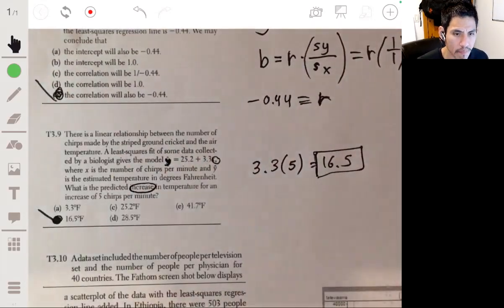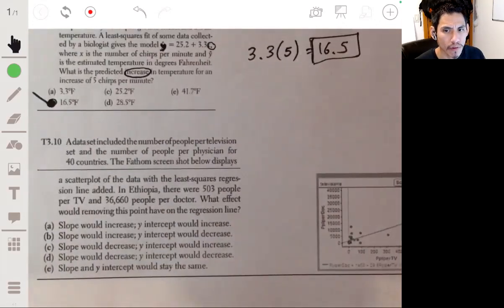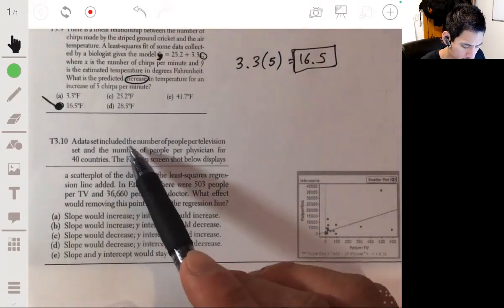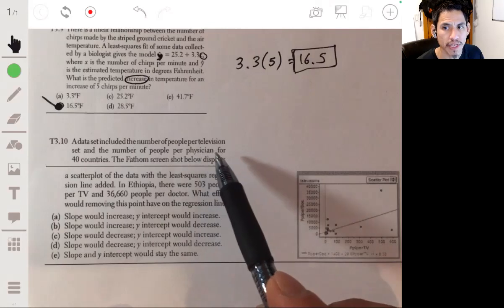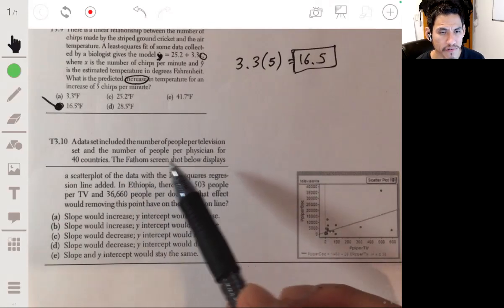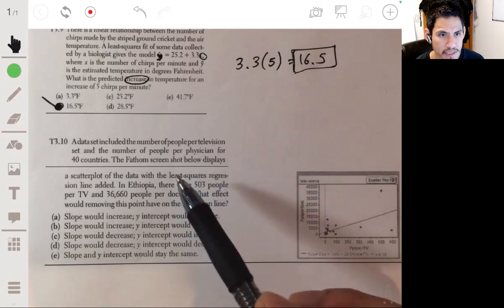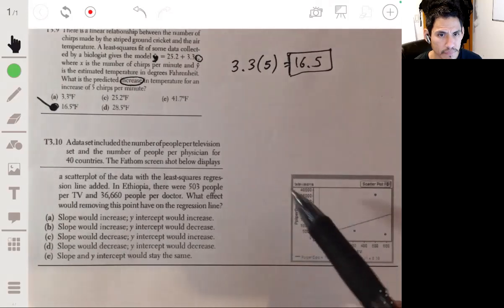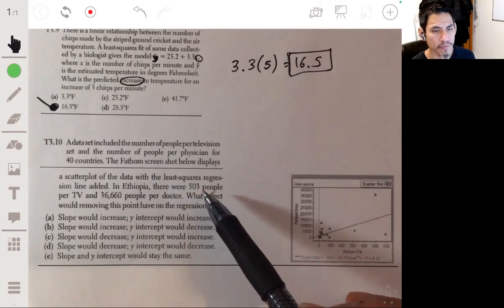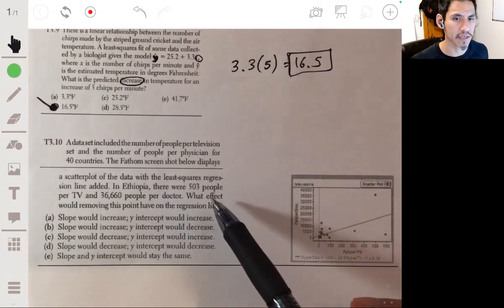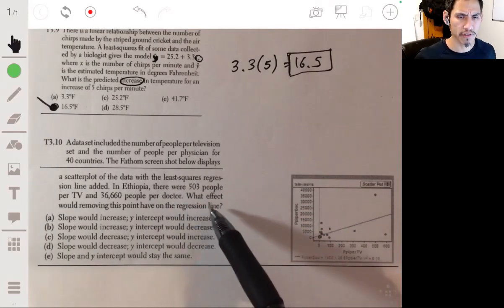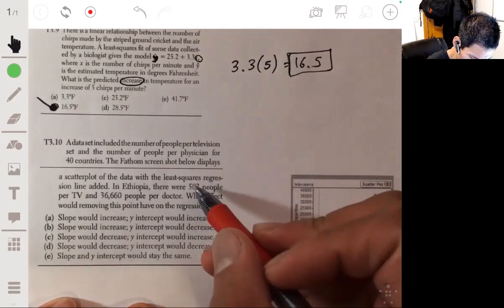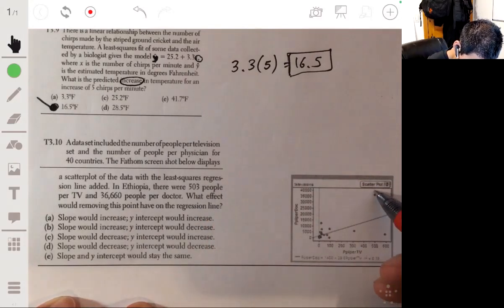All right, number 10. Let's look at this graph here. The data set includes the number of people per television set and the number of people per physician for 40 countries. The Fathom screenshot below displays the scatterplot of the data with the least squares regression line added. So in here. Okay. In Ethiopia, there were 503 people per TV and 36,660 people per doctor. What effects would removing this point have on the regression? Okay, so we're talking about 503, 36,660. We're talking about this point right here.